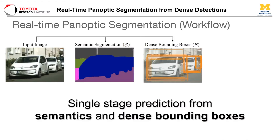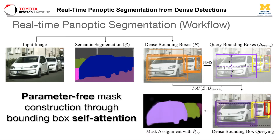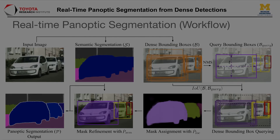Here is what our workflow looks like. First, we predict semantic segmentation and dense bounding box proposals through a single-stage fully convolutional neural network. Just like regular object detection models, standard NMS is then used to get high-confidence and non-duplicate bounding boxes as instance seeds. We call them query bounding boxes. We then compute the IOU of each query box against all box proposals in a self-attention manner. Pixels with high IOU values are considered as instance foreground of the query box. Finally, the semantic segmentation results are used to refine the instance masks for smoother results.